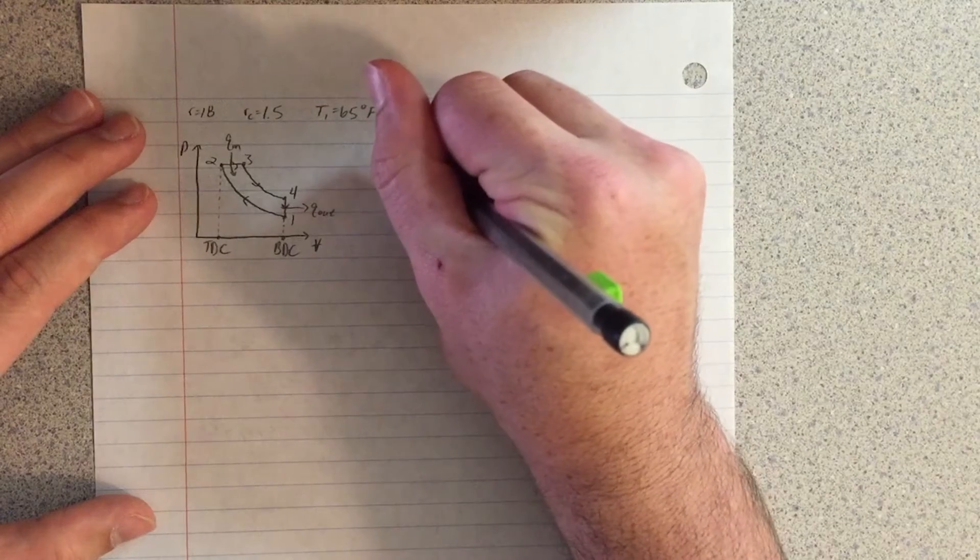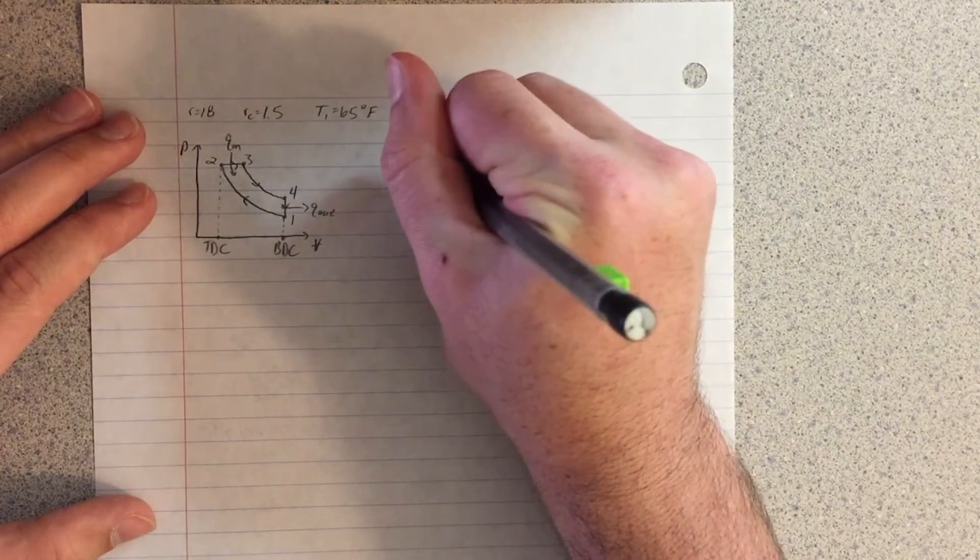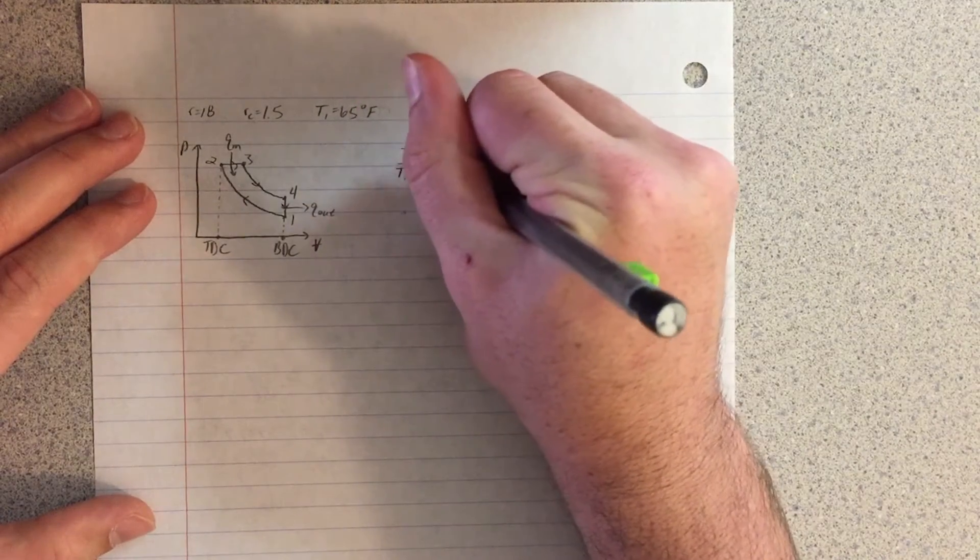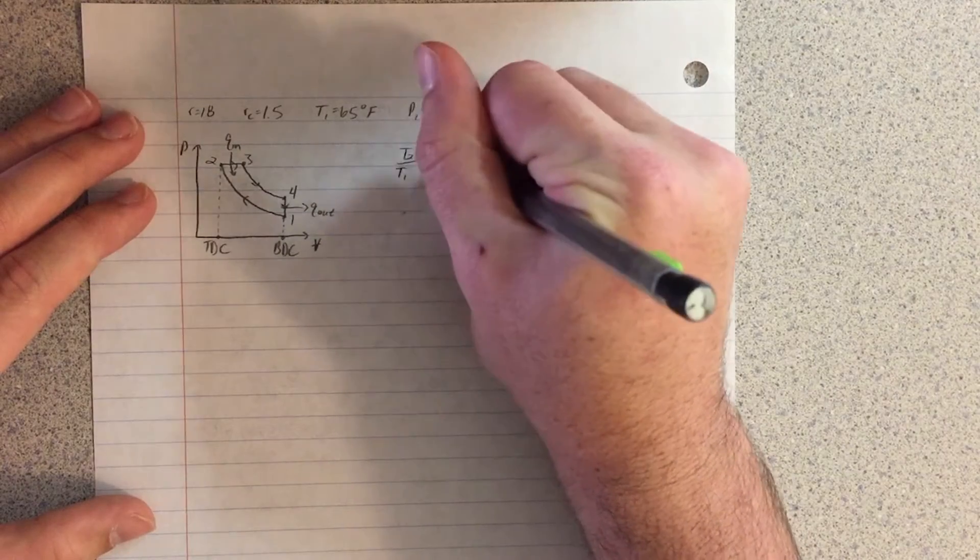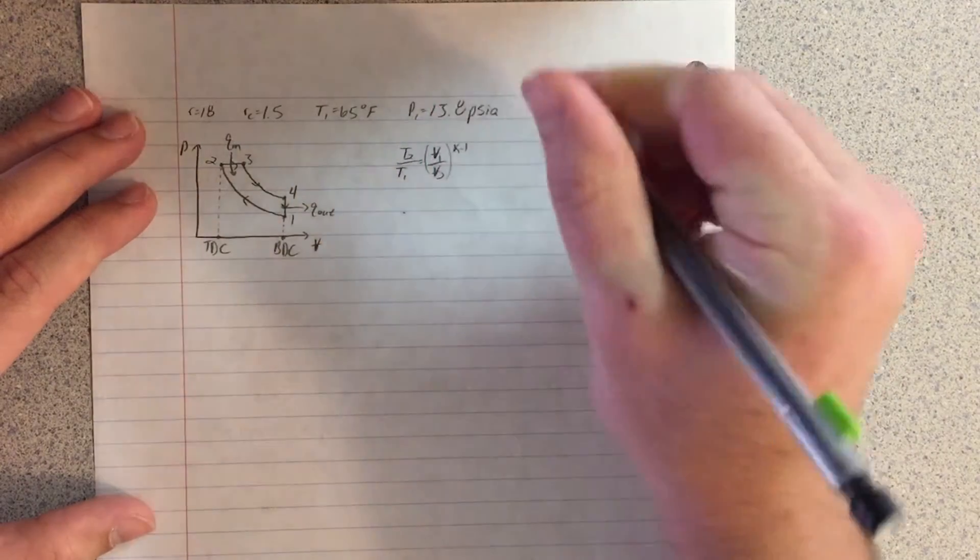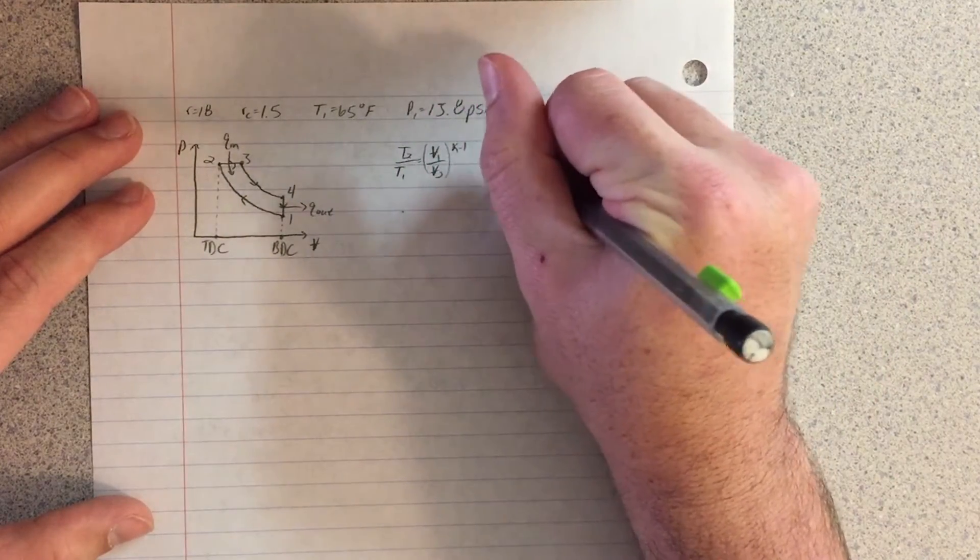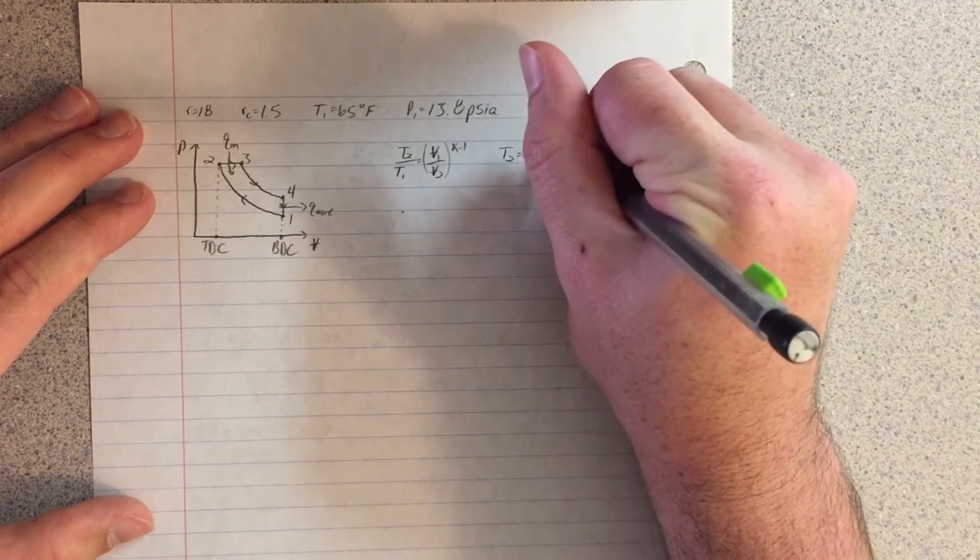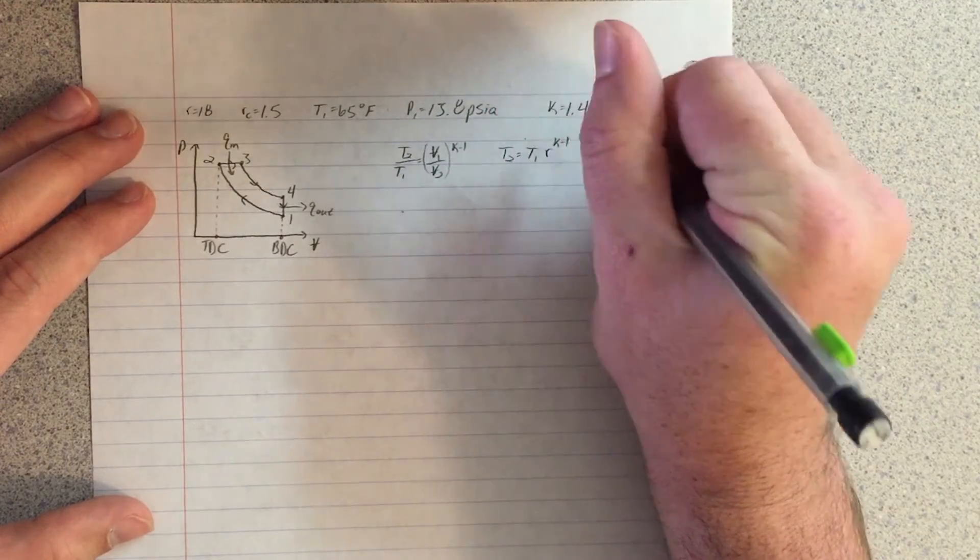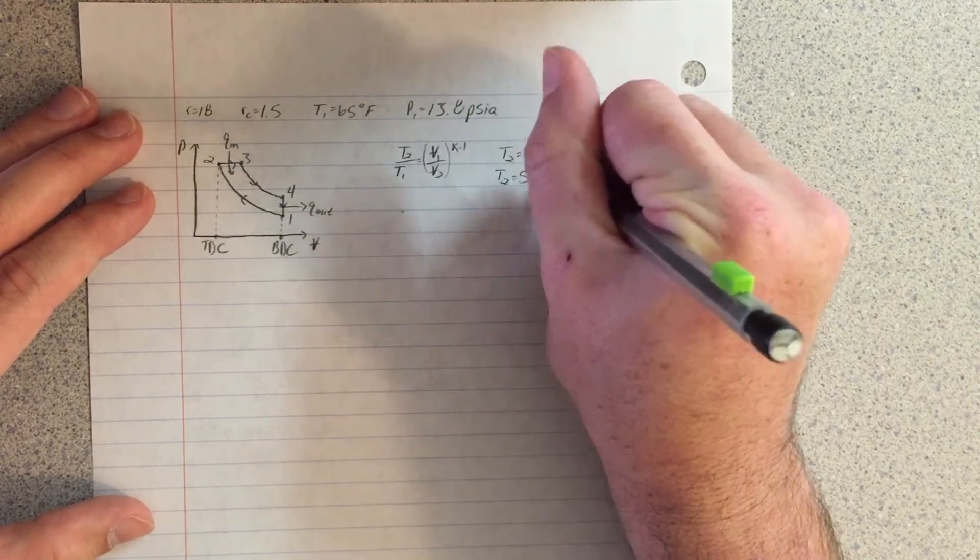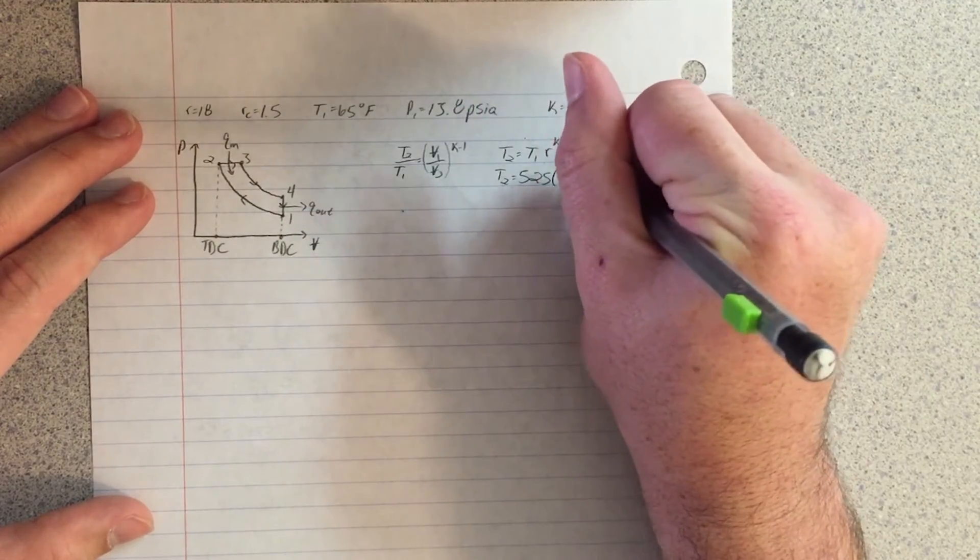In order to find the maximum air temperature, the value for the temperature at point 2, T2, must first be calculated using the equation T2 over T1 equals V1 over V2 to the K minus 1. This equation simplifies down to T2 equals T1 times R to the K minus 1.